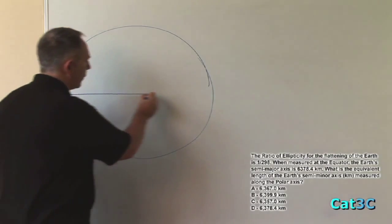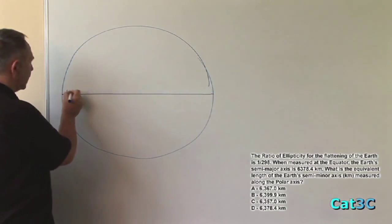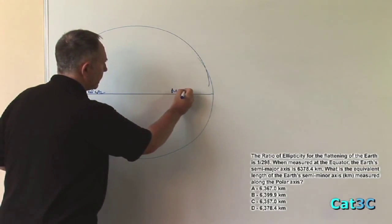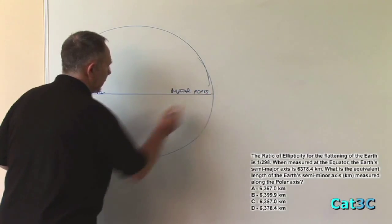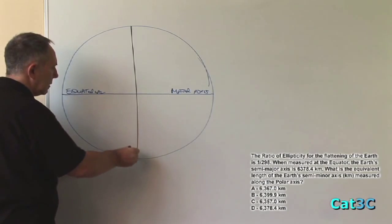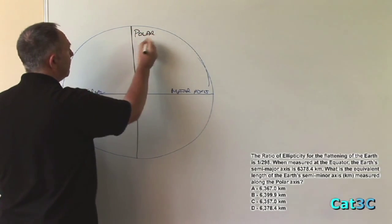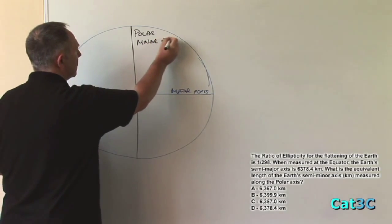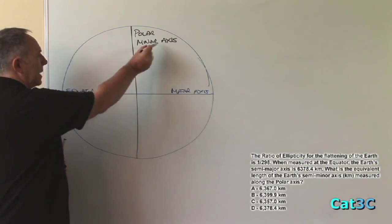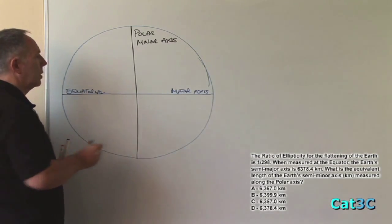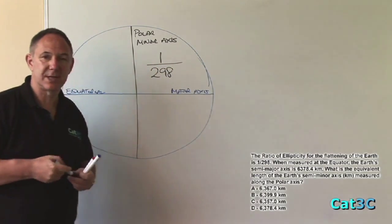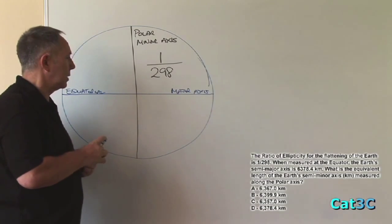This gives us an equatorial axis, known as the major axis, and a vertical polar axis or minor axis. The relationship between the equatorial and polar axis is 1 over 298. This is the international standard unit accepted for this relationship between the two.